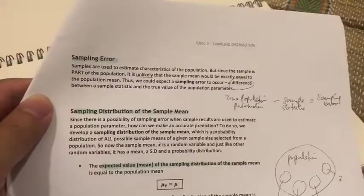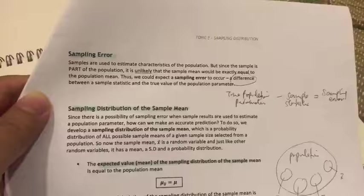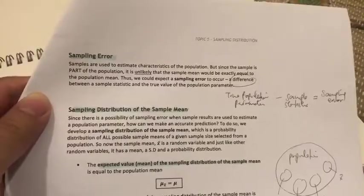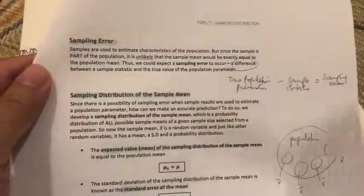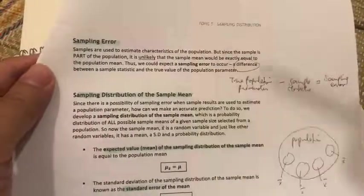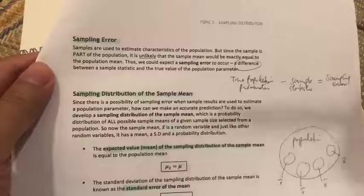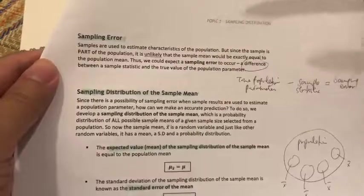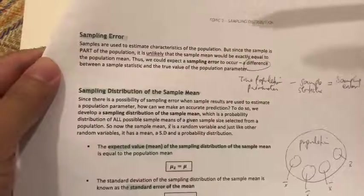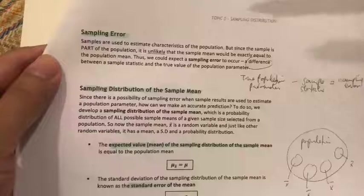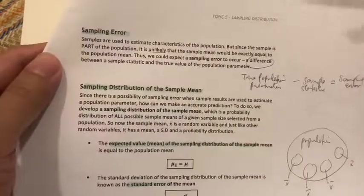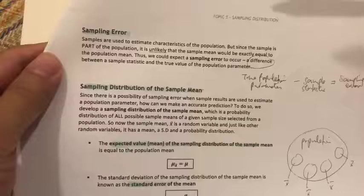In the last video, we learned about sampling — what is sampling, why do we collect samples, and how to collect samples. Going back to the understanding of why we collect samples: what we're actually interested in is the population and its characteristics. But due to the fact that it may be impossible to collect everything in the population, maybe because it's too expensive or too time-consuming, that is the reason why we collect samples.